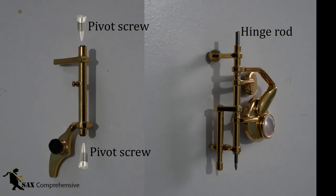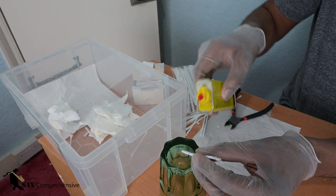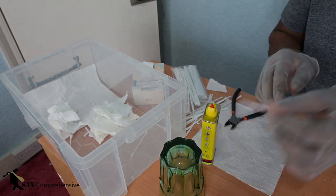Now moving on to the keys. The keys are either held on the saxophone by pivot screws or hinge rods. Clean out the barrel of the keys held with hinge rods using a pipe cleaner wet with naphtha or lighter fluid.